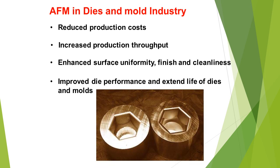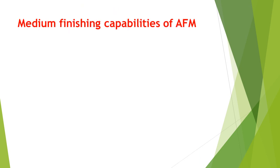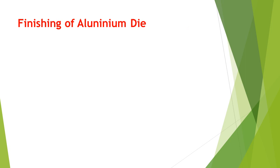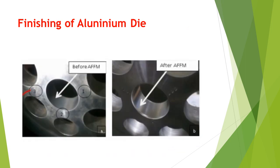Looking at the medium finishing capabilities of AFM: the left-hand side diagram shows a roughness value of 900 nanometers in the 3D image, and after using the AFM process, a finer surface of 70 nanometers is obtained. We can also see the finishing of an aluminum die using this AFM process and the resulting surface finish.